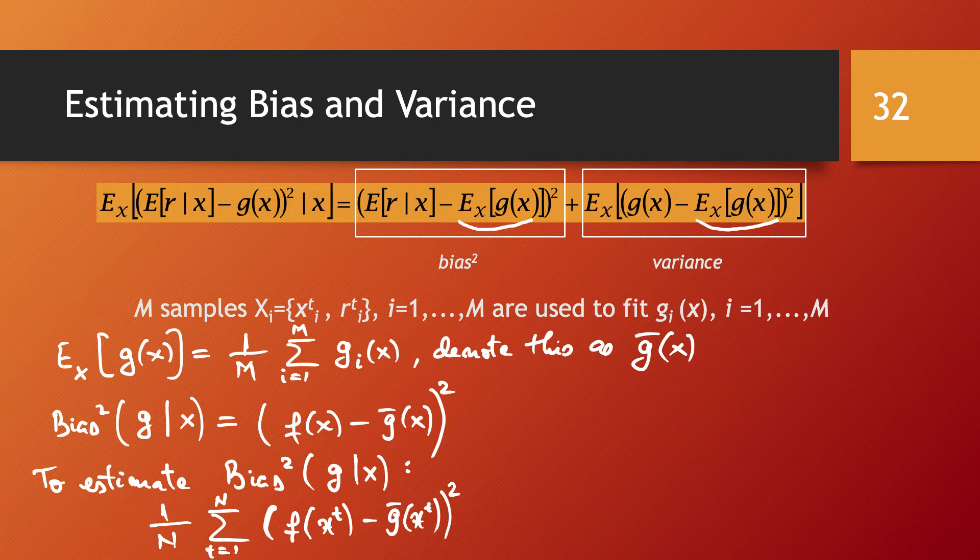This is a reasonable estimation: you have a number of data points, so to estimate the bias squared overall you simply take the average of that squared value across all data points.